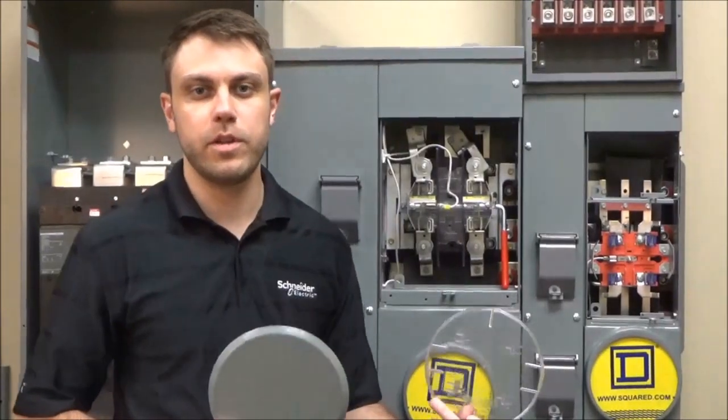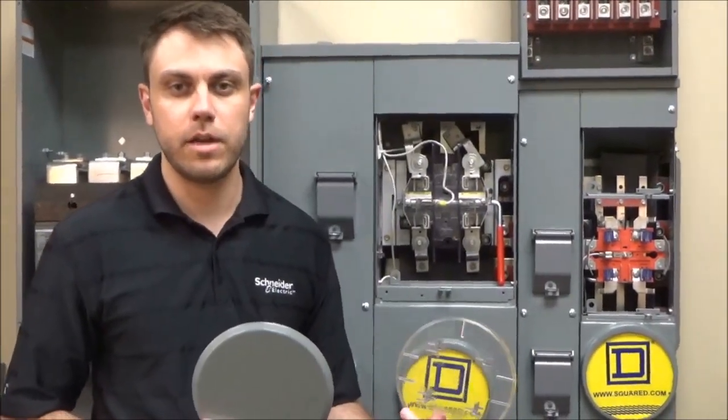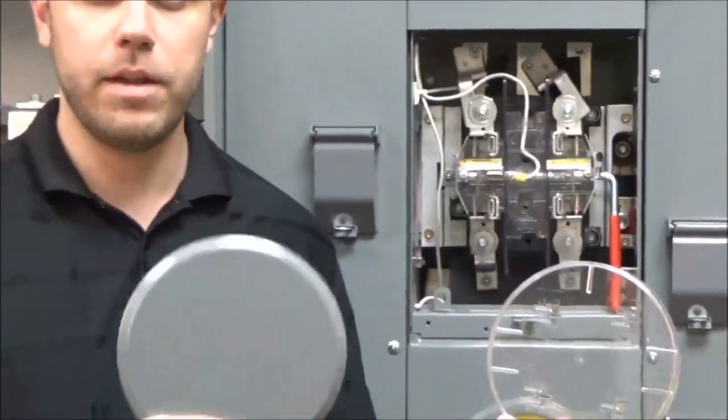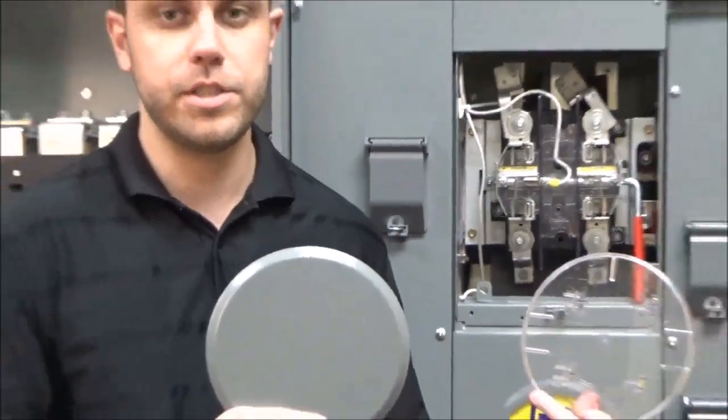In this video we will be showing you the difference between the Lexan meter cover, part number 29007, and the metal meter cover, part number RSG4.